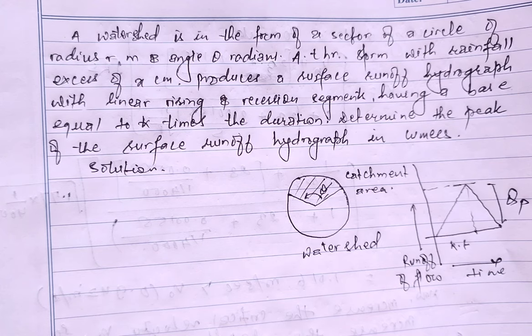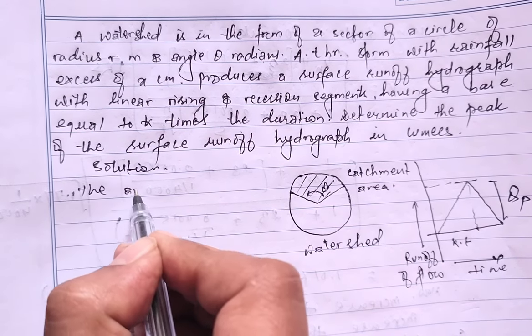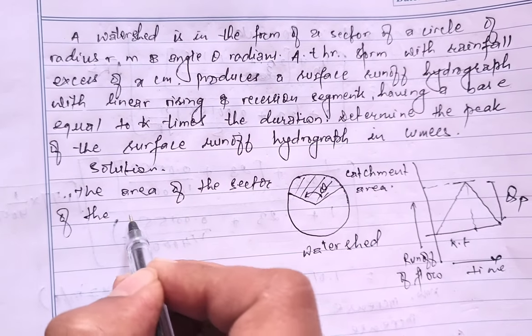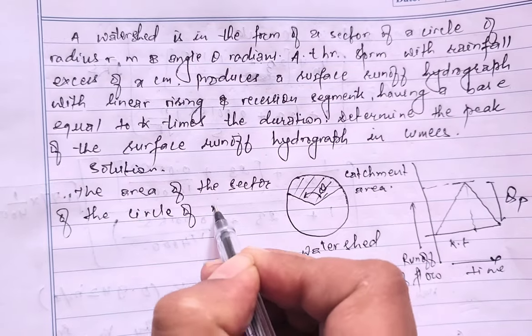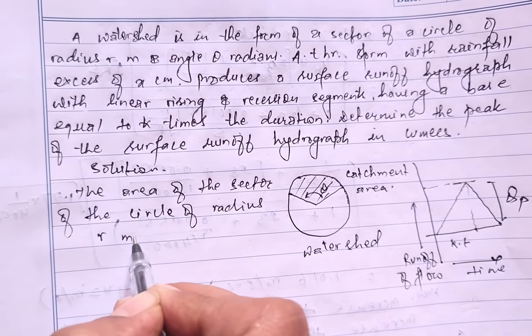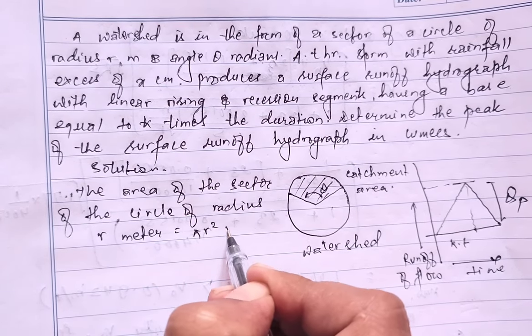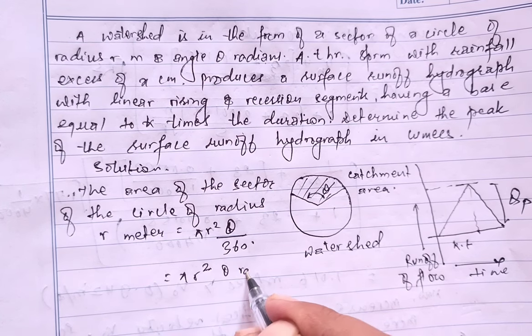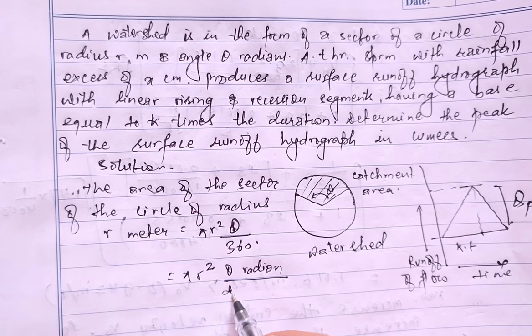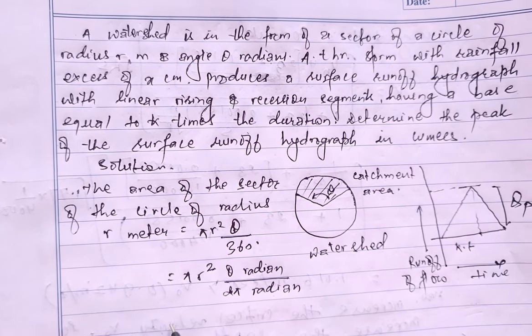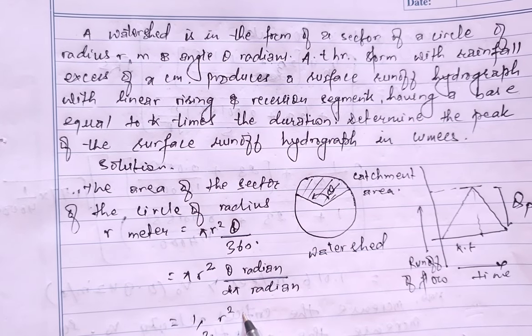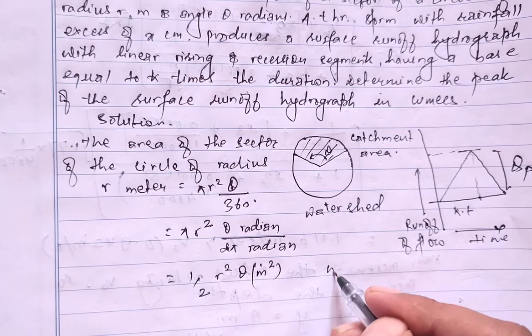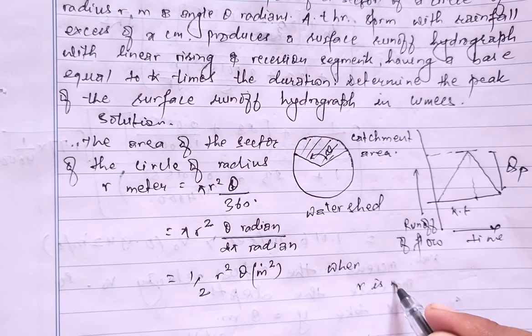The area of the sector of the circle of radius - the area of the circle of radius can be expressed as πr² theta radian divided by 2π radian, or this can also be written as half of r² theta m², where r is in meter.